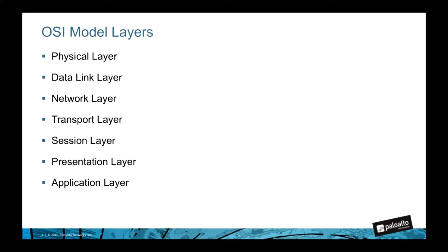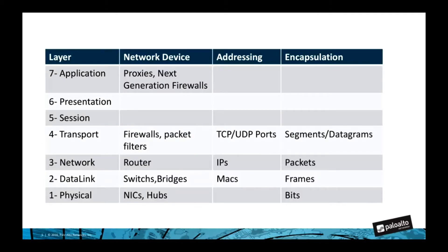In ascending order, the layers of the OSI model are: physical, data link, network, transport, session, presentation, and application. This image shows the layers in descending order along with their associated protocols and networking devices responsible for forwarding and inspecting traffic at different layers.